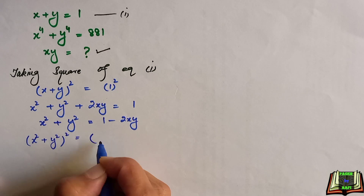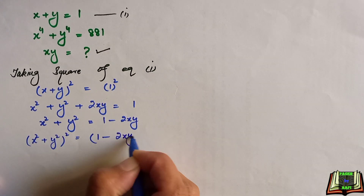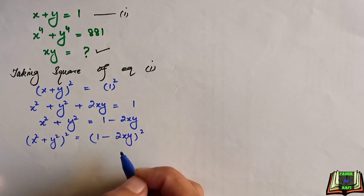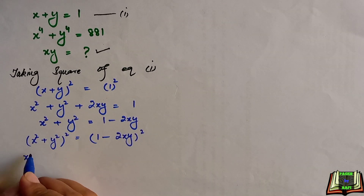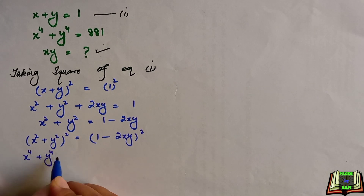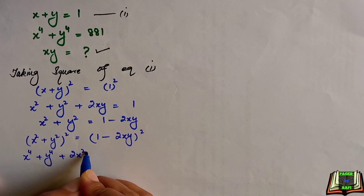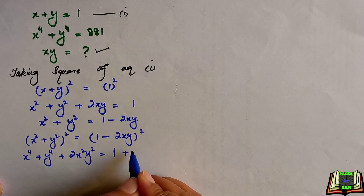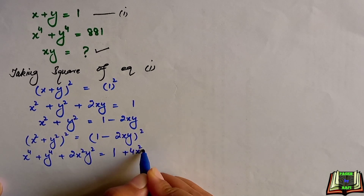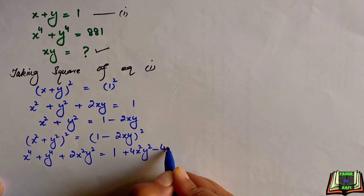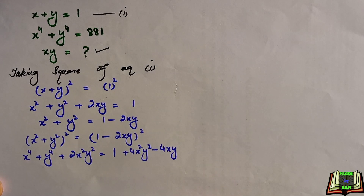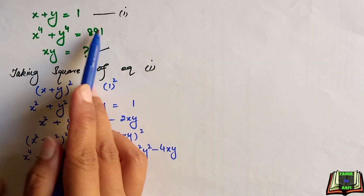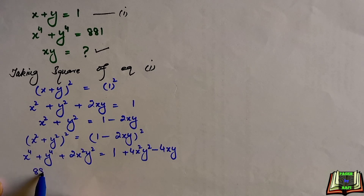We will take the square of this equation once again on both sides. It becomes x squared plus y squared whole square equals 1 minus 2xy whole square. Opening the squares: x to the power 4 plus y to the power 4 plus 2x squared y squared equals 1 plus 4x squared y squared minus 4xy. Since x to the power 4 plus y to the power 4 equals 881, we substitute that value in.